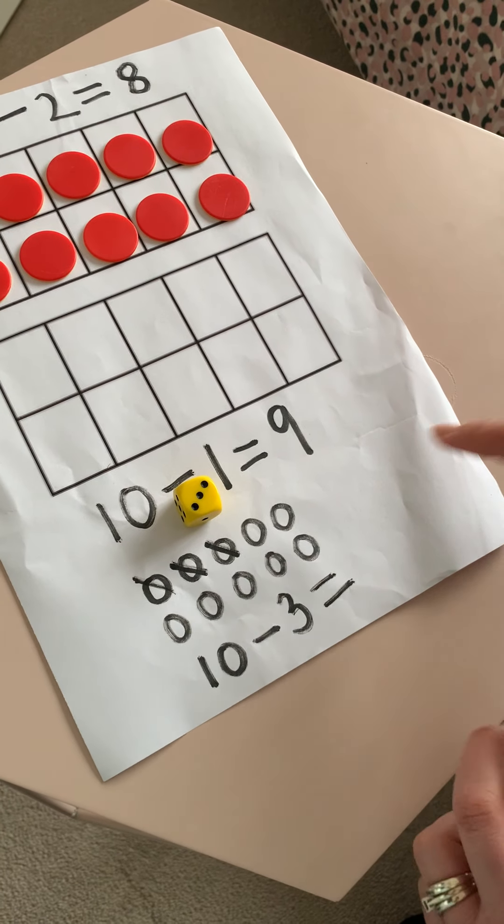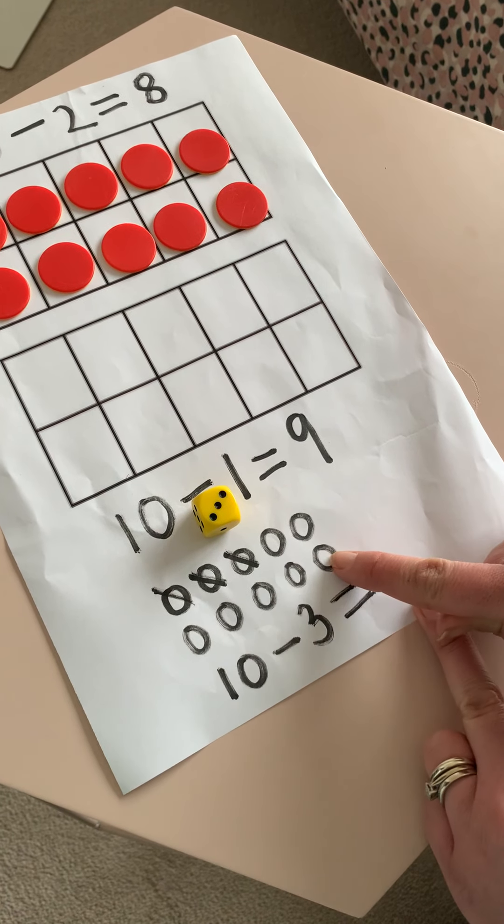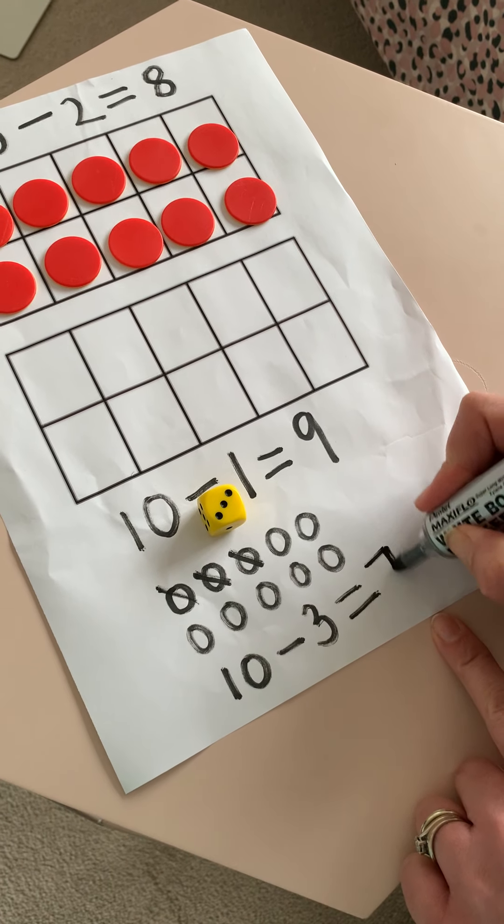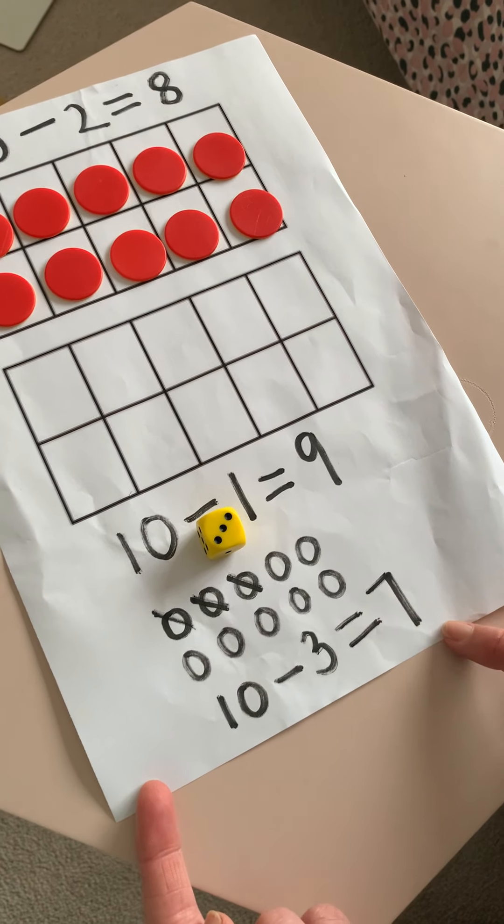Let's see what our answer is. 1, 2, 3, 4, 5, 6, 7. Our answer is 7. 10, take away 3, equals 7.